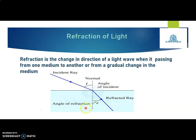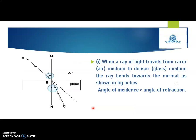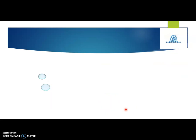This ray diagram shows refraction of light, as discussed in our previous video. When a ray of light travels from a rarer medium to a denser medium, the ray always bends towards the normal. That means the angle of incidence is always greater than the angle of refraction. Therefore, the refractive index of the denser medium with respect to the rarer medium, given by Snell's law, is always greater than 1 — for example, the refractive index of glass with respect to air.